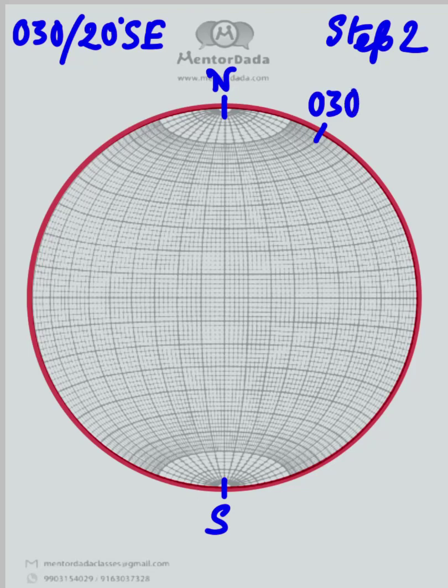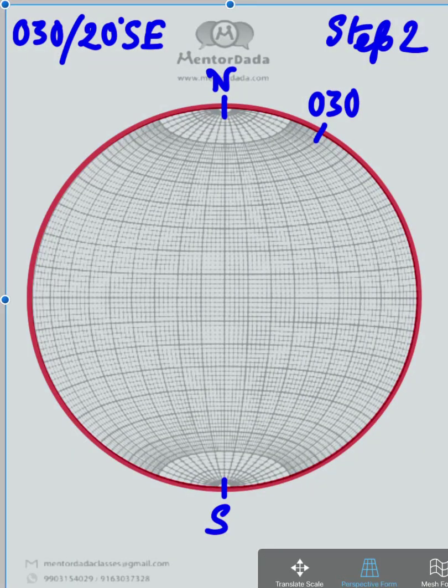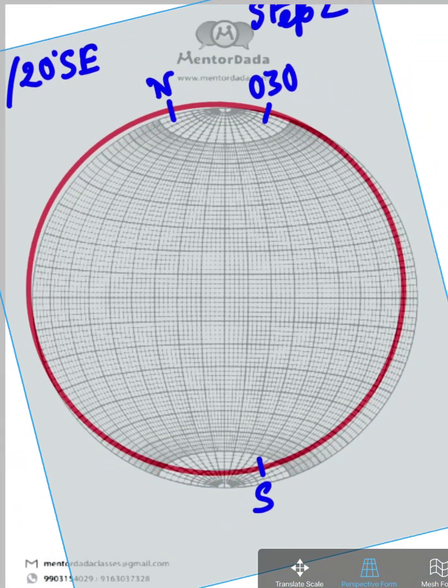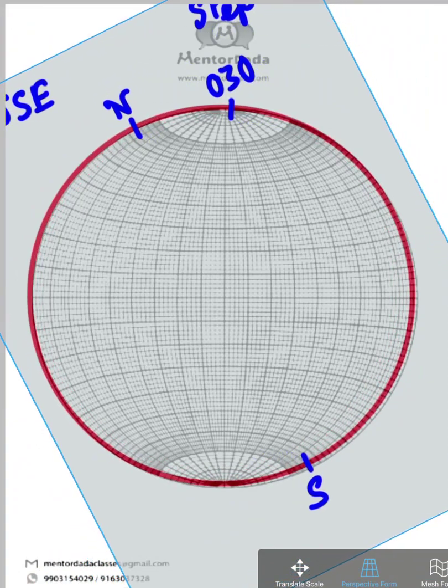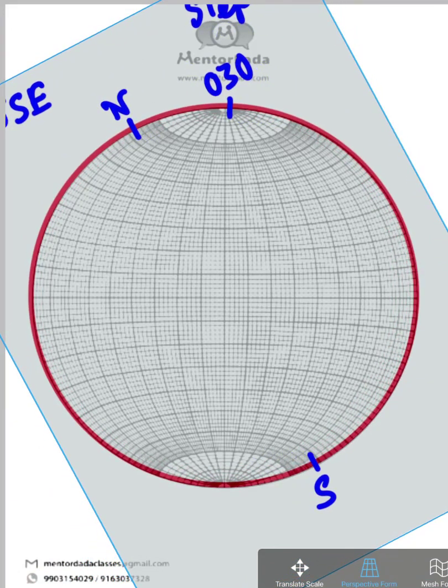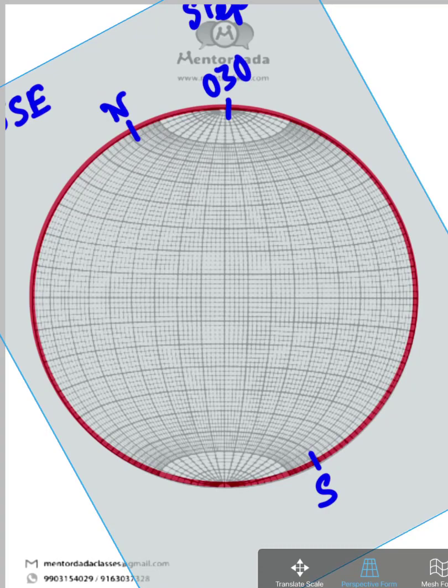Our next step would be to take the 030 point in north-south line. We will basically move the tracing paper and align the 030 point in the north-south line.